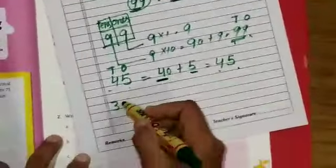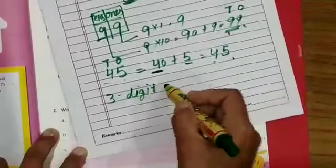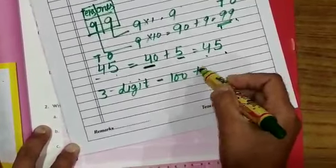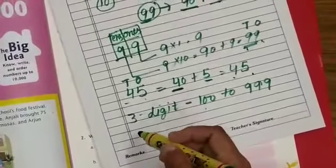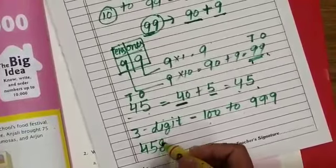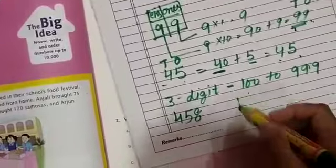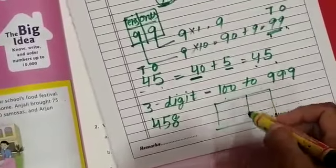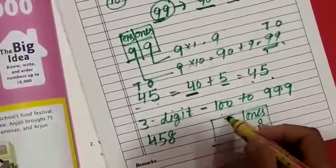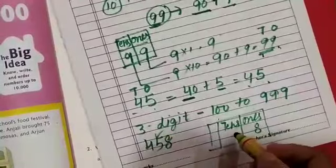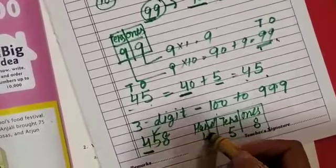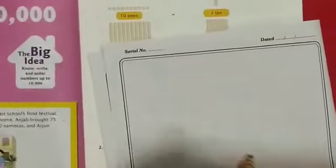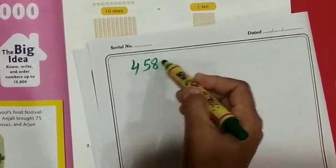After this, we will start three-digit numbers, from 100 to 999. I am taking one number: 458. If I draw a place value chart — ones, tens, hundreds — on the ones place I put 8, on the tens place I put 5, and on the hundreds place I put 4. So if I expand 458, this will come: 400 plus 50 plus 8.